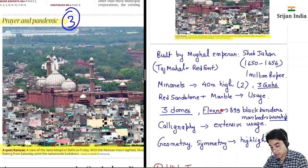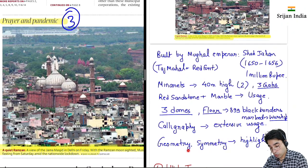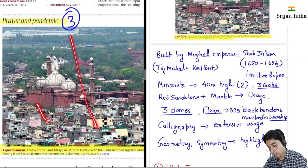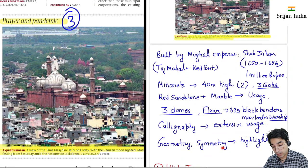Extensive usage hai. Yeh jo Mughal architecture hota hai, yeh Islamic architecture hai. Ismein geometry pe bahut zyada emphasize kiya jata hai. Jaise Taj Mahal ka bhi symmetry dekho — bahut symmetrical hai. Yeh Jama Masjid bhi bahut symmetrical hai — yeh iski highlight hoti hai.